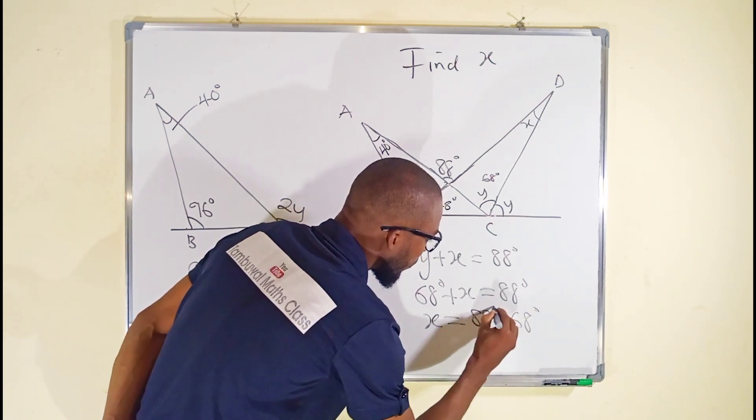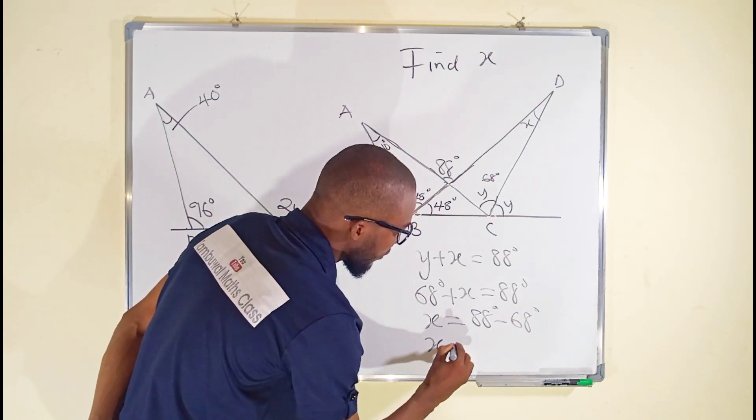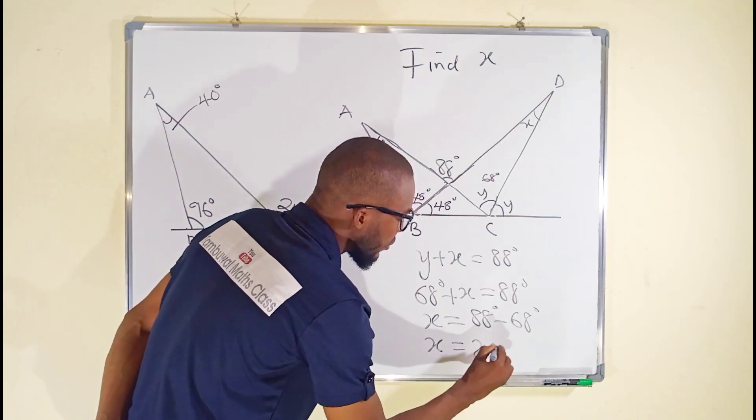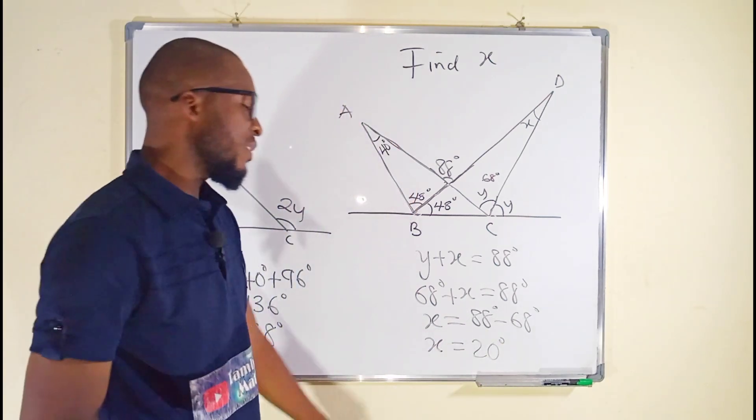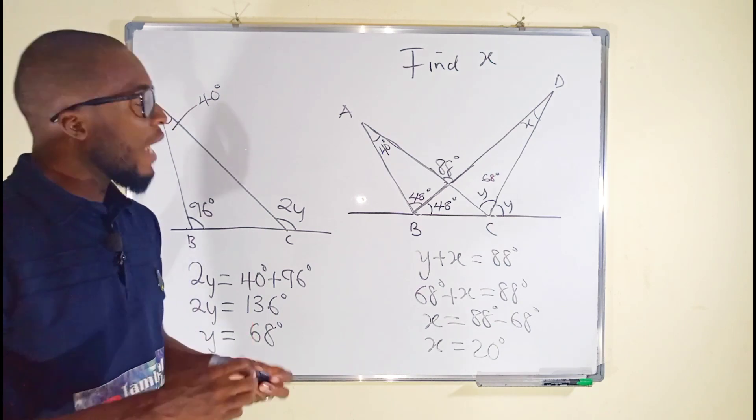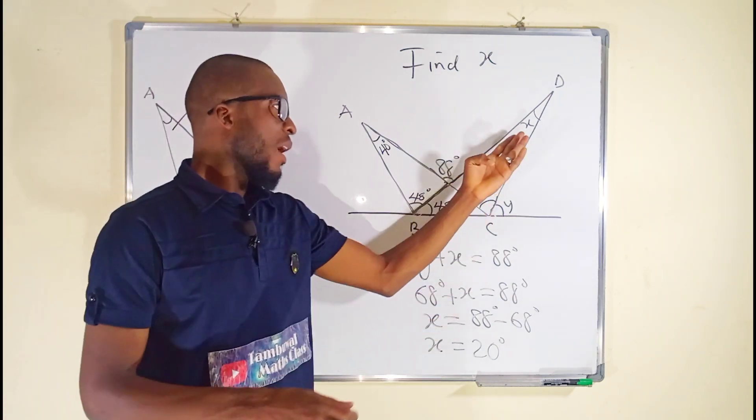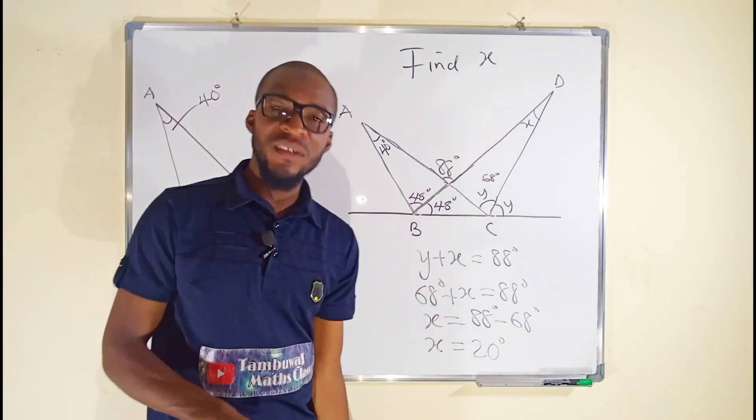And x is equal to 20, because 88 minus 68 is equal to 20. And hence x is equal to 20 degrees.